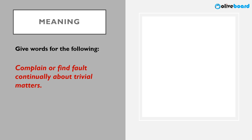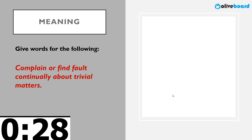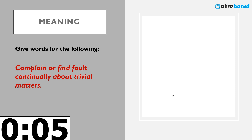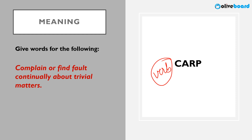Next: to complain or find fault about small things — trivial, unimportant matters. You always complain about stupid silly things. The correct word is carp — it's a verb. When you complain about small things, grumble or moan about stupid silly things, that is called carp. Remember it because you'll have four options and probably you'll have this word.